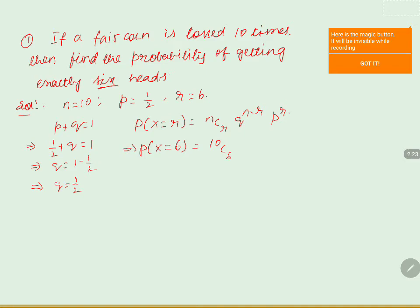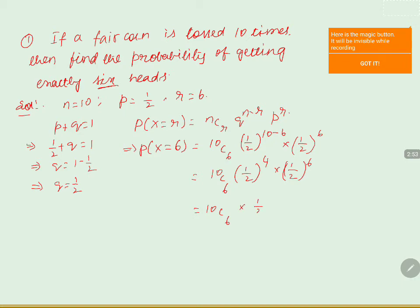Substituting: 10C6 × (1/2)^(10−6) × (1/2)^6, which is 10C6 × (1/2)^4 × (1/2)^6. Since the bases are equal, we add the exponents: (1/2)^(4+6) = (1/2)^10. So we have 10C6 × (1/2)^10.